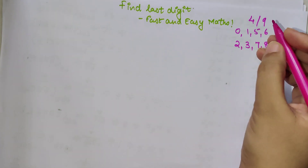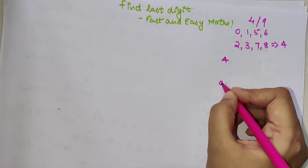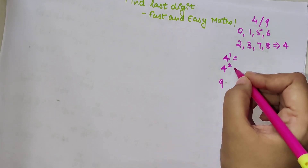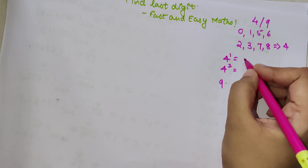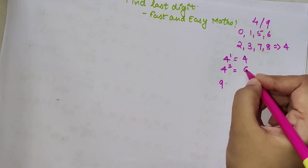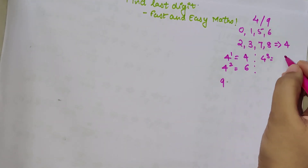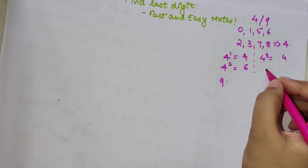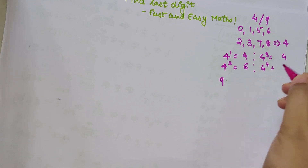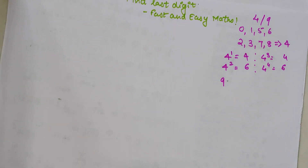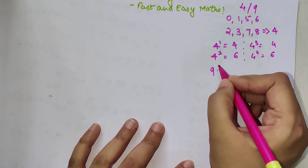Let's figure out the power cycle of 4 and 9. 4 to the power 1 is 4, and 4 to the power 2 has a last digit of 6. 4 to the power 3 — 6 times 4 — last digit is again 4. 4 to the power 4 — 4 times 4 — last digit is again 6. So after every power of two, my last digits repeat.